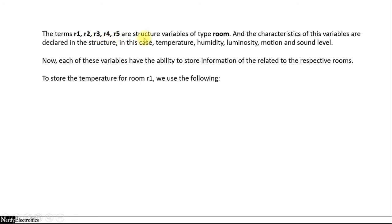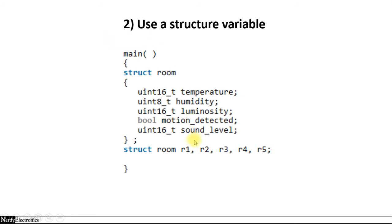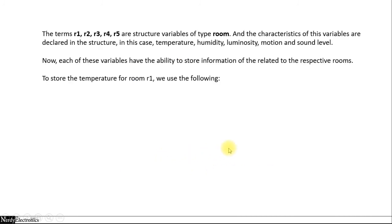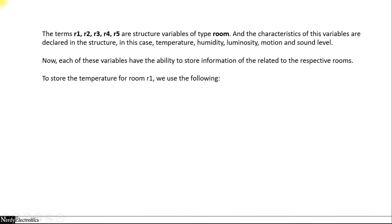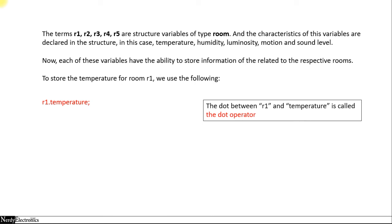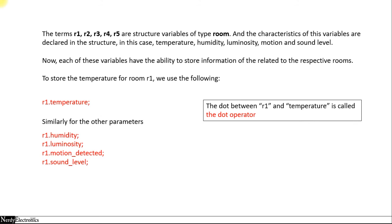R1, R2, R3, R4, R5 are called the structure variables — structure variables of type room. The characteristics of these variables are declared in the structure as member variables. To store the temperature of room 1, we use R1.temperature. The dot between R1 and temperature is called the dot operator. Similarly, we can store information of other sensors: R1.humidity, R1.luminosity, R1.motion_detected, R1.sound_level. So whenever we read R1.humidity, we know it corresponds to room 1.